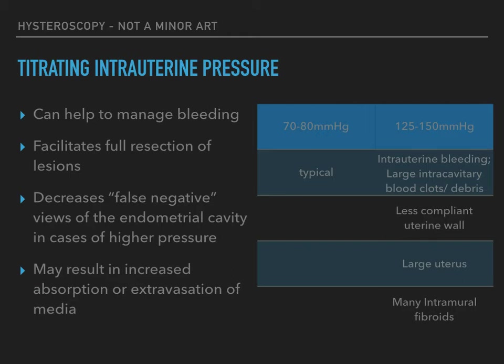These may occur with higher or constant endometrial pressure. The surgeon should use the lowest pressure that allows optimal visualization. Typical intrauterine pressure ranges from 70 to 80 mmHg. Higher pressures of up to 125 to 150 mmHg may be required for patients with intrauterine bleeding, large intercavitary blood clots or other debris, a uterine wall that is less compliant than average, or a uterus that is large or has intramural fibroids. A higher intrauterine pressure may result in increased absorption or extravasation of the distending medium. Thus, if a higher pressure is used, the fluid deficit should be monitored closely, the procedure performed as quickly as possible, and the pressure lowered if no longer needed.